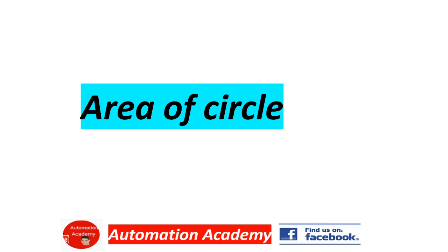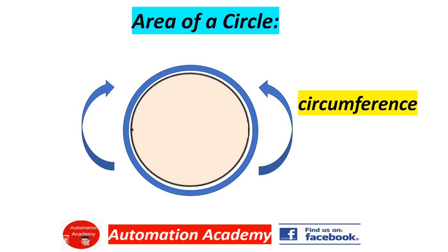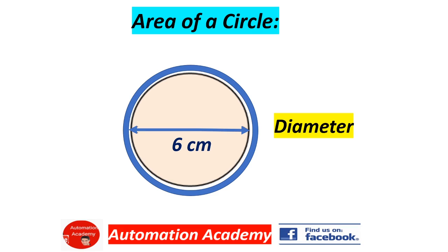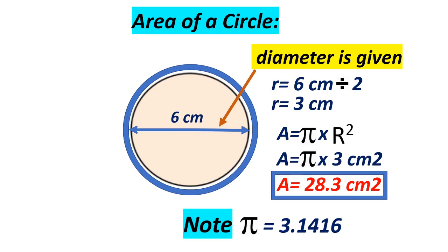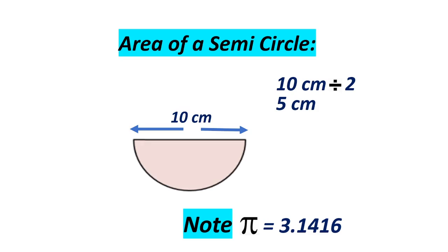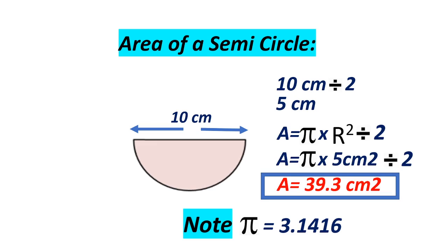Our next topic is area of a circle. The round part of a circle is the circumference. The diameter is 6 centimeters and this is the radius. The formula is Area = π × R². If the diameter is given, radius equals 6 cm divided by 2, which is 3 cm. Area = π × 3² = 28.3 cm². For a semicircle with diameter 10 cm, radius = 5 cm. Area = π × R² divided by 2 = π × 25 ÷ 2 = 39.3 ÷ 2 = approximately 39.3 ÷ 2, giving 13.3 cm² — but this value depends on rounding.